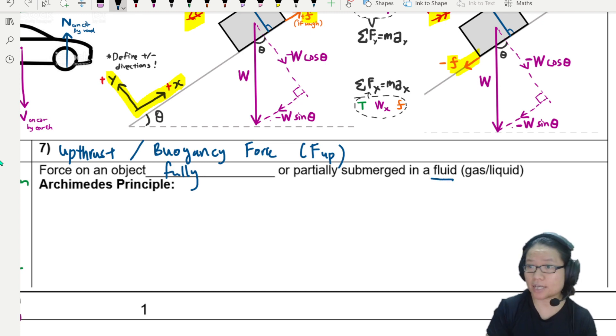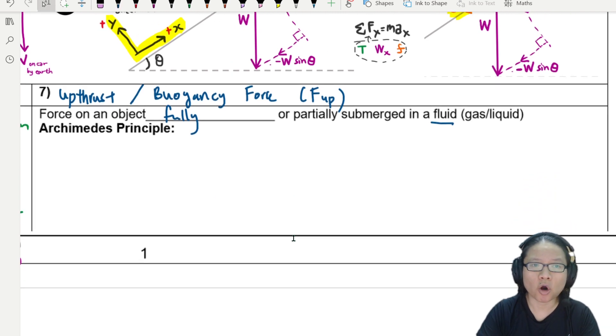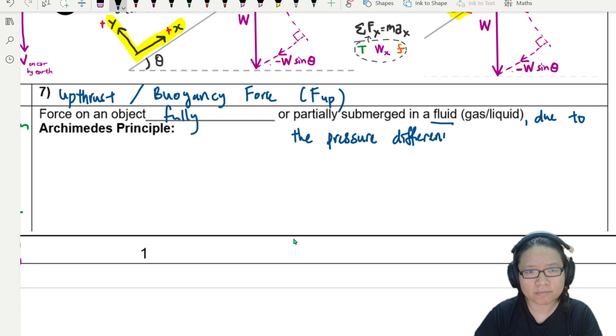This is the force of an object that is fully or partially submerged in the fluid. It can be gas or liquid. Meaning, if you talk about a hot air balloon, there's also still uptrust. This force on an object that is fully or partially submerged in a fluid or gas liquid, due to the pressure difference above and below the fluid, I mean the object.